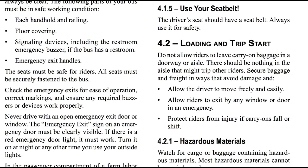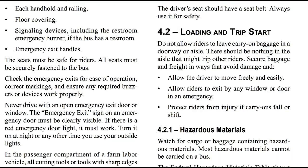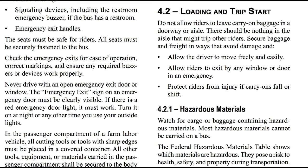The driver's seat should have a seatbelt — always use it for safety. Loading and Trip Start: Do not allow riders to leave carry-on baggage in a doorway or aisle. There should be nothing in the aisle that might trip other riders. Secure baggage and freight in ways that avoid damage and allow the driver to move freely and easily, allow riders to exit by any window or door in an emergency, and protect riders from injury if carry-ons fall or shift while driving.